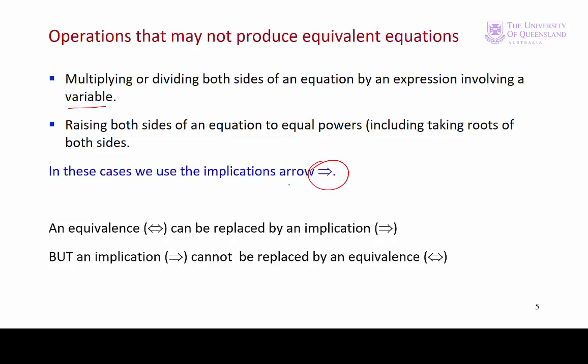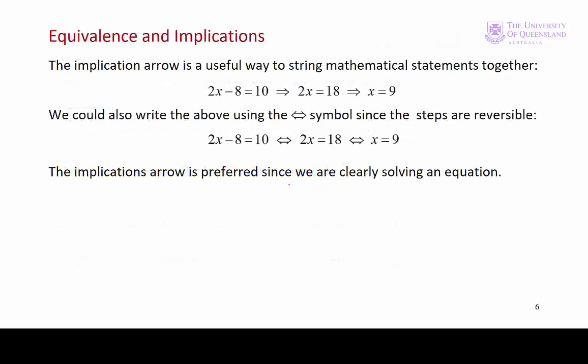When we're deriving the solution to an equation, we can replace an equivalence arrow with an implications arrow, but not vice versa. Equations are mathematical statements about the relationship between variables. When we solve equations, we perform the operations discussed above and link one equation to the next with an implications arrow.